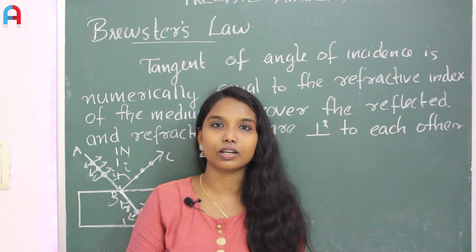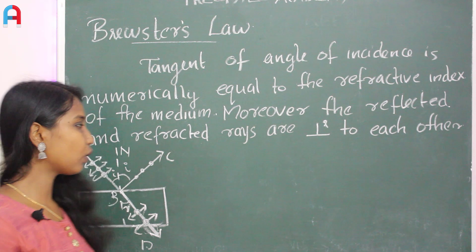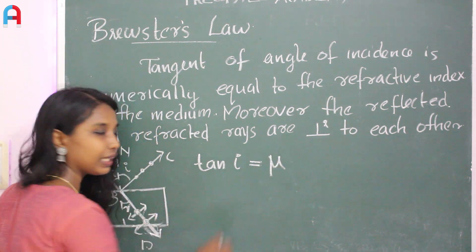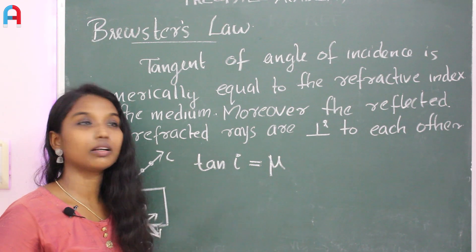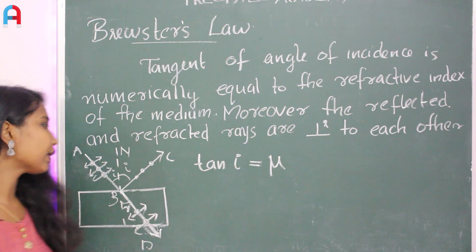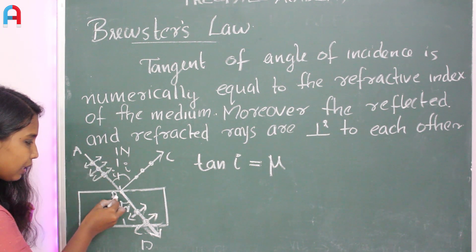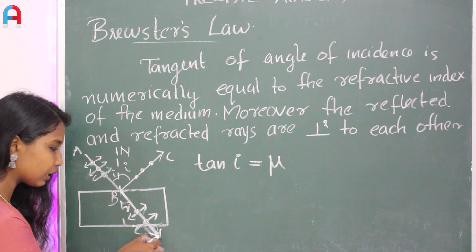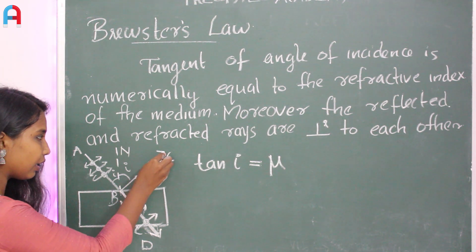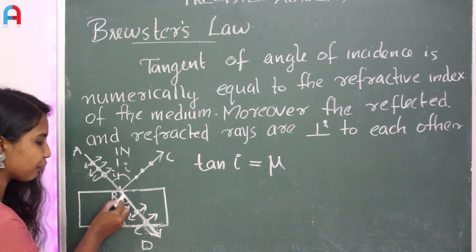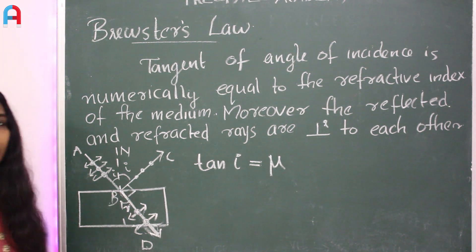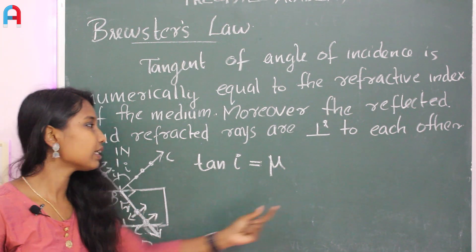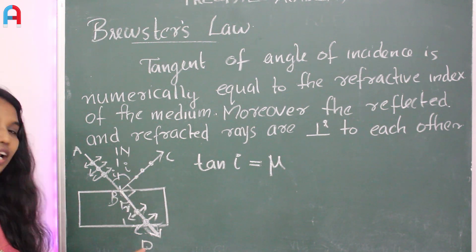Now we are going to discuss Brewster's statement. The statement is: tan of the angle of incidence is numerically equal to the refractive index of the media. The incident light is unpolarized; BC is the reflected polarized light, and BD is the refracted ray. The reflected ray and refracted ray are mutually perpendicular, and tangent of angle of incidence equals the refractive index mu.